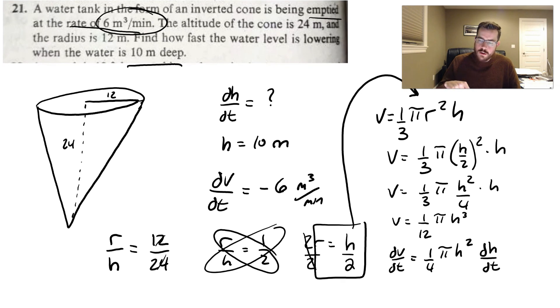And so then I'm going to fill in what I know from this problem. Well, dV/dt we know is negative 6. (1/4)π times our height, we said the height was 10 here. So I'm going to fill in 10 squared. And then we're going to try to solve this for dh/dt.